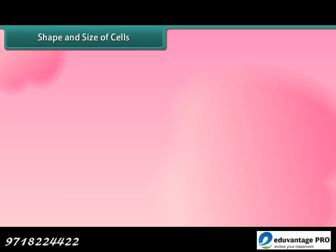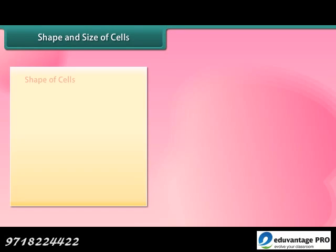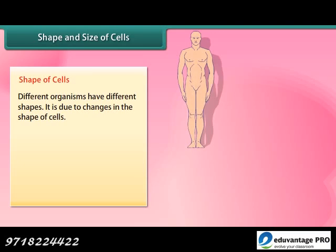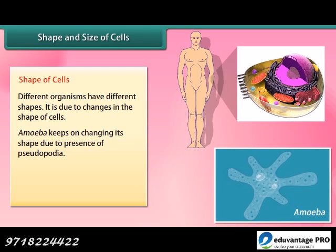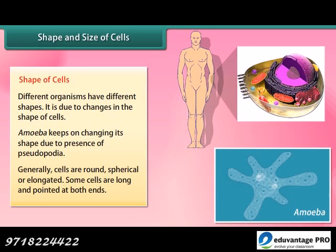Shape and size of cells: Different organisms have different shapes, due to changes in the shape of cells. Amoeba keeps on changing its shape due to the presence of pseudopodia. Generally, cells are round, spherical or elongated; some cells are long and pointed at both ends.